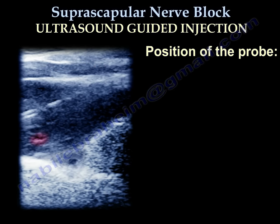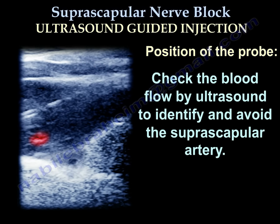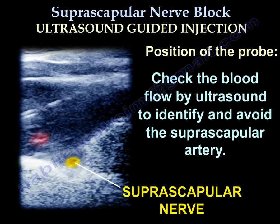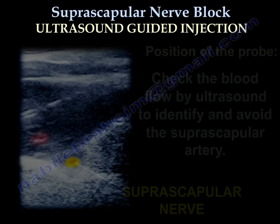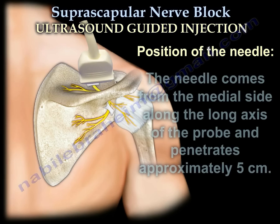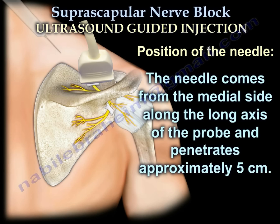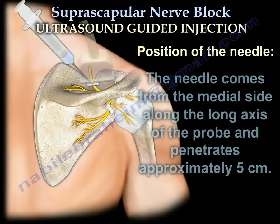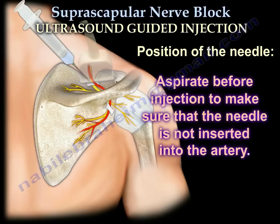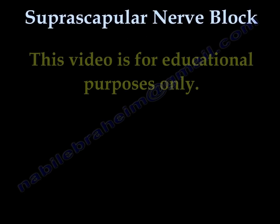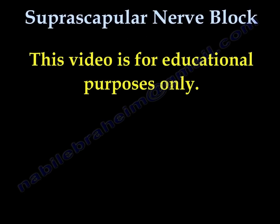Check the blood flow by ultrasound to identify and avoid the suprascapular artery. The needle will come from the medial side along the long axis of the probe and penetrates approximately 5 cm. Aspirate before you inject to make sure that the needle is not inserted into the artery.